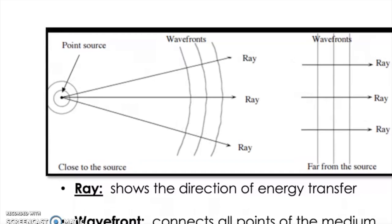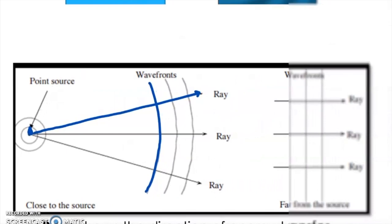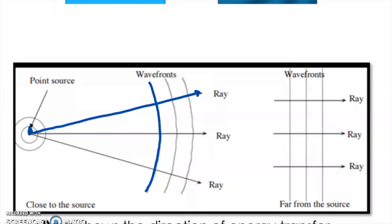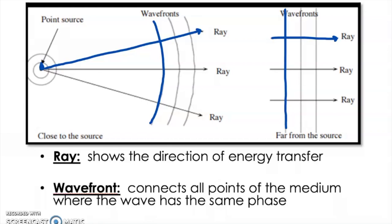That's how I like to approach wave fronts and rays. The water droplet spreading out in ripples — those ripples are called wave fronts, and the direction in which they spread we call a ray. If you get far enough from the source, those rays look parallel and the wave fronts are perpendicular to them. Formally, a ray shows the direction of energy transfer, and a wave front connects all points of the medium where the wave has the same phase — for example, all crests or all troughs.